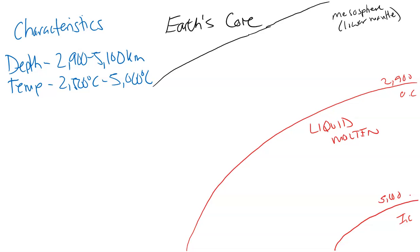So in terms of density, you're looking at extreme pressures, creating a density of 9.9 grams per centimeter cubed up to a possible 12.2 at the lower section of the outer core.